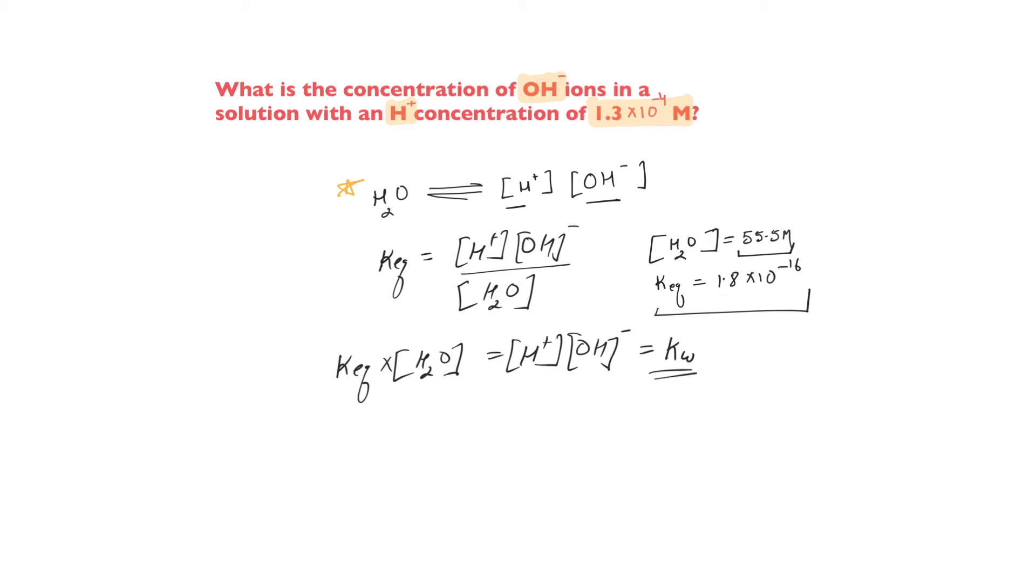All you need to know is this exact part: H plus times OH minus, H plus concentration and OH minus concentration. The product of theirs equals KW and the KW happens to be 10 to the power minus 14.